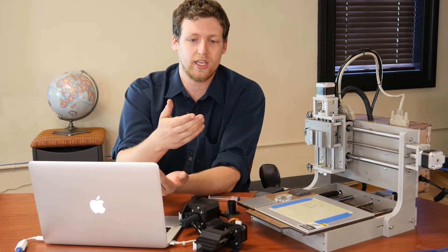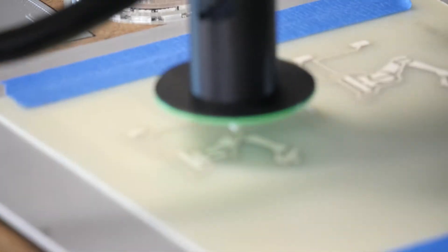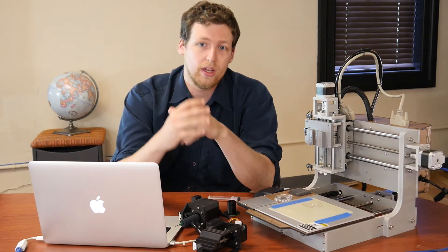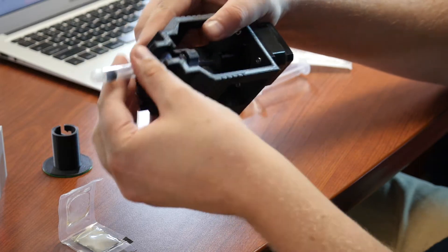For trace printing it does pick and place functionality and we can also dispense solder or conductive glue to build a board. The process is actually fairly simple.